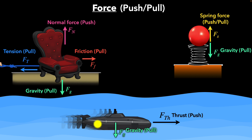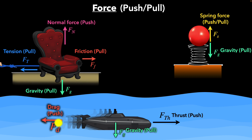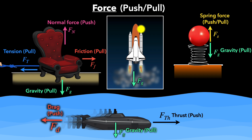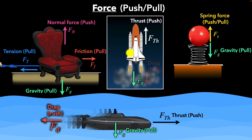Are there any other forces? Yes — whenever an object is moving through a fluid (meaning gas or liquids), the fluid resists the motion by pushing it in the opposite direction. We call that the drag force, and all fluids produce drag. For example, a rocket accelerating upwards pushes down on hot gases, which push back up — that's thrust. But air is a fluid, so when the rocket moves through air it experiences a drag force in the opposite direction. Both thrust and drag forces are contact forces and pushing forces.